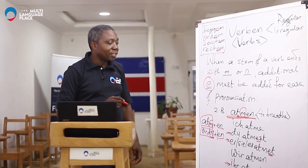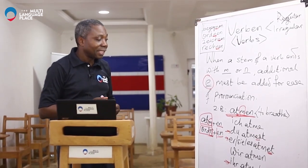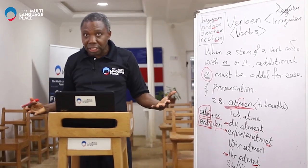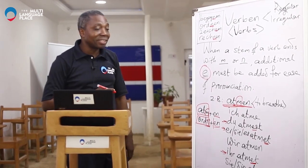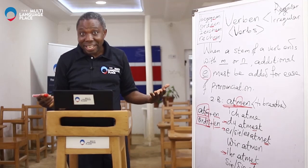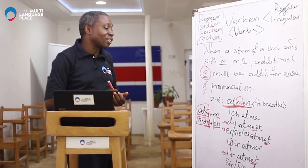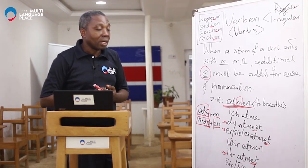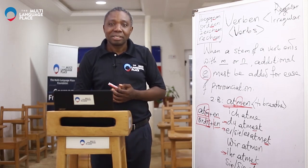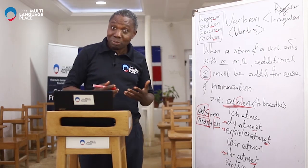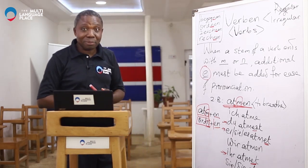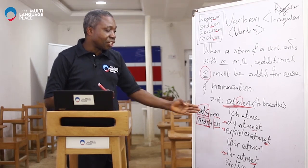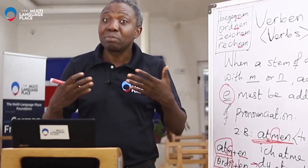This is another interesting verb that we need to learn. Remember what you do usually after we conjugate — form sentences with the verb. 'Atmen' is an interesting verb. When you think of what is happening in the world presently, this verb is very important — to breathe. So, ich atme means I breathe.